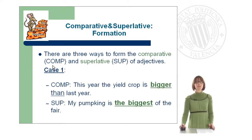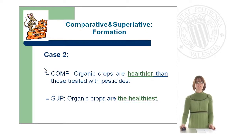Now let's have a look at the comparative and superlative formation. There are three main ways to form the comparative and superlative of adjectives. Case one — the comparative: 'This year, the yield crop is bigger than last year.' The superlative: 'My pumpkin is the biggest of the fair.' Case two — the comparative: 'Organic crops are healthier than those treated with pesticides.' The superlative: 'Organic crops are the healthiest.'